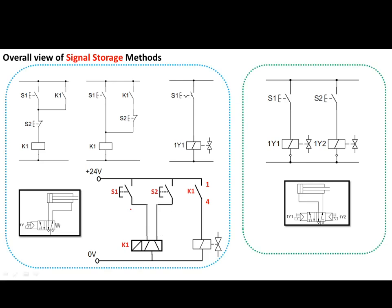Here is an overview of all the discussed methods. The dominant off, dominant on, mechanical latch button, and latch relay circuits all rely on a single solenoid DCV. Whereas the double solenoid valve method uses two push buttons with a double solenoid valve.